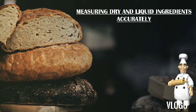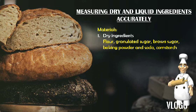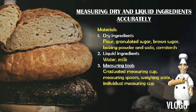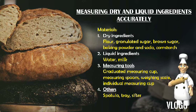Let us now proceed to measuring dry and liquid ingredients accurately. It is important to measure them accurately. First, we need dry ingredients such as flour, granulated sugar, brown sugar, baking powder, soda, and cornstarch. Second, we have liquid ingredients like water, milk, oil, and others. Third, and very important, are the measuring tools: the graduated measuring cup, measuring spoons, weighing scale, and individual measuring cup. We also need a spatula, a tray, and a sifter.